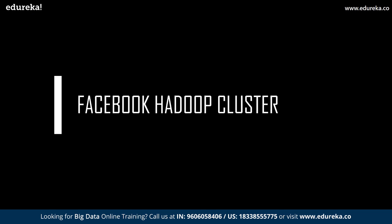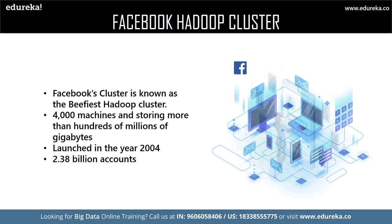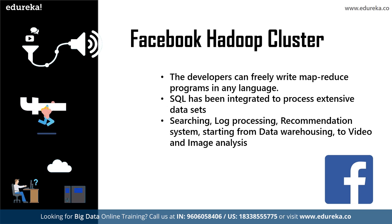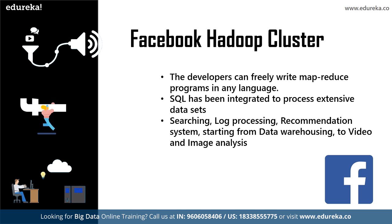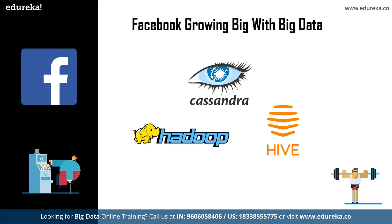Now let us move on to our next topic: Facebook's Hadoop cluster. Since its launch in 2004, Facebook is one of the biggest users of the Hadoop cluster, called the 'beefiest Hadoop cluster.' It approximately uses 4,000 machines and is capable of processing millions of gigabytes together. Facebook has 2.38 billion active users. To manage such a huge network, Facebook uses multiple storage frameworks and millions of developers writing MapReduce programs in multiple programming languages.